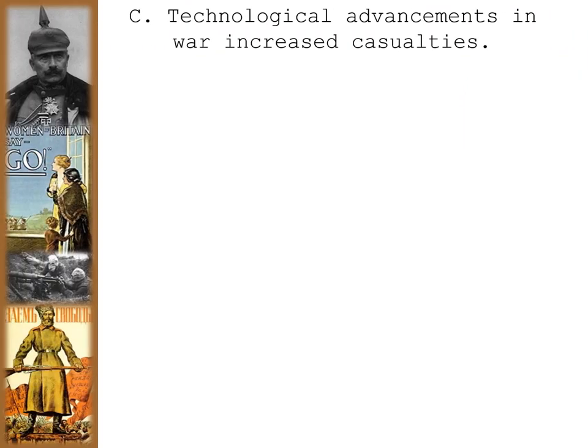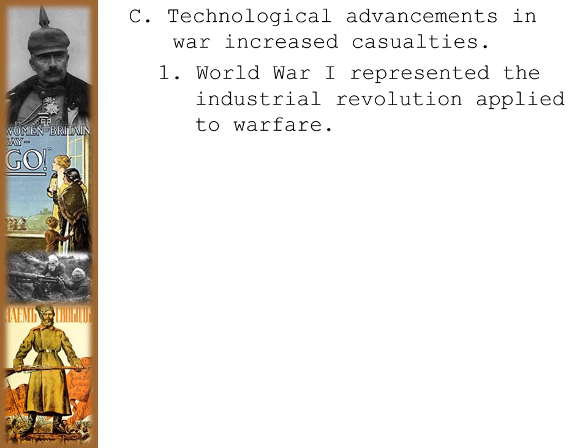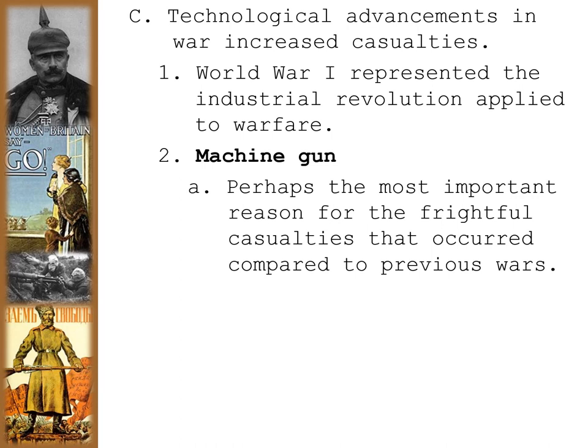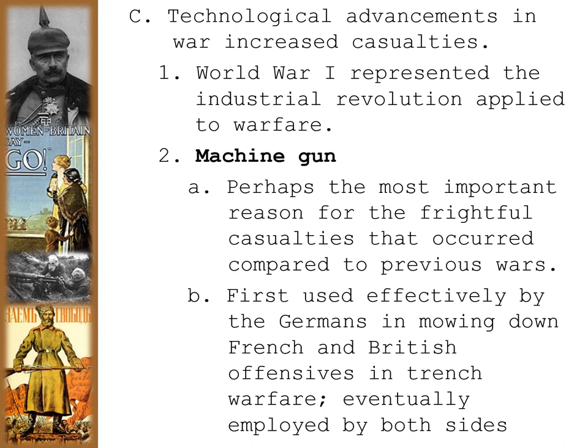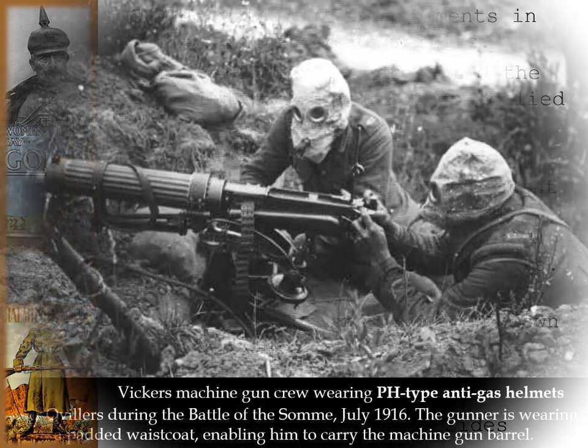The technological advancements of the Industrial Revolution are part of why this war had such increased casualties — World War I is sometimes seen as the world's first fully industrialized war. The machine gun was perhaps the most important reason for the frightful casualties compared to previous wars. It was first used effectively by the Germans in mowing down French and British troops coming up over the top into no man's land. Eventually the machine gun would be employed by both sides.